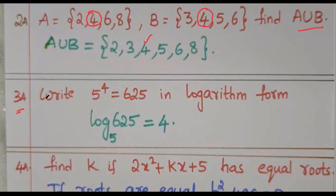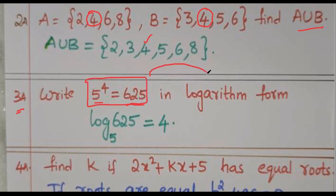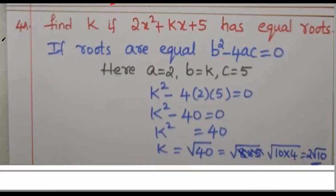Question 3 answer: Write 5 to the power 4 equals 625 in logarithm form. This is in exponential form, and we convert it to logarithm form. The answer is: log base 5 of 625 equals 4.